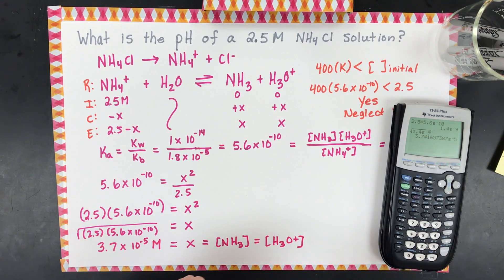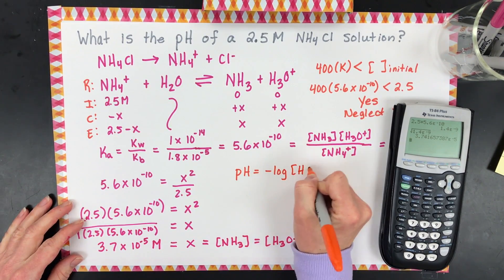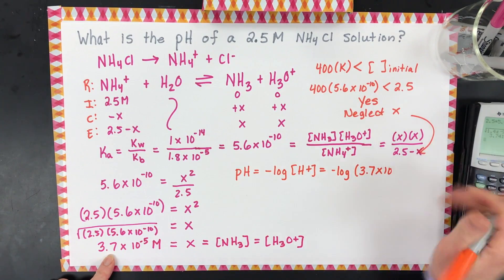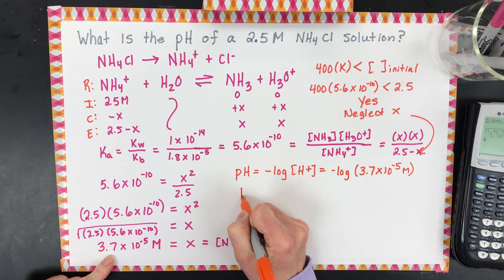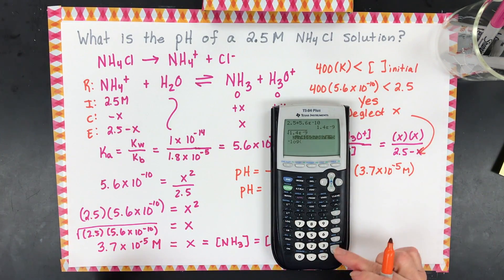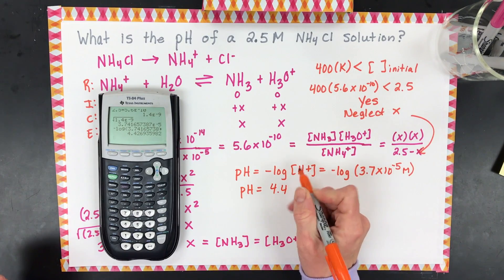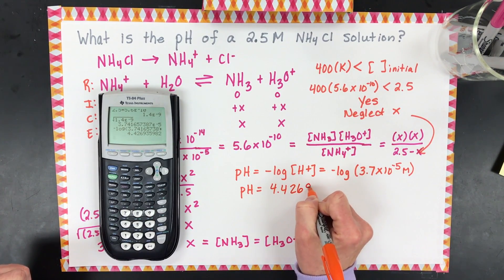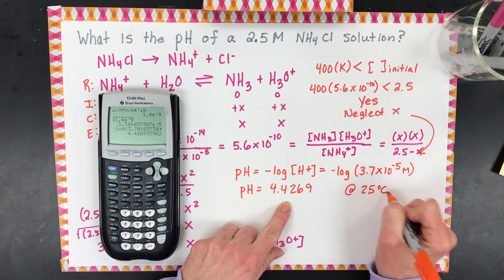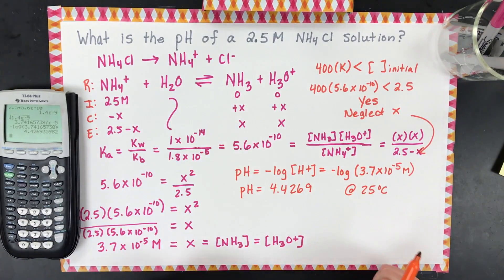Now it's time to go back to pH equals negative log. We're going to take the negative log of 3.7×10⁻⁵. Using the calculator, we get 4.42. Remember, we called this an acidic salt — its pH at 25 degrees is definitely acidic and it's a weak acid, confirming that hydronium ions are being formed.